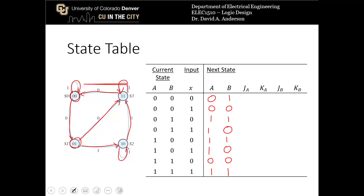Now we assign J and K inputs for each flip-flop — one for each state bit: J_A, K_A, J_B, and K_B — by looking at how they transition from one state to the next.